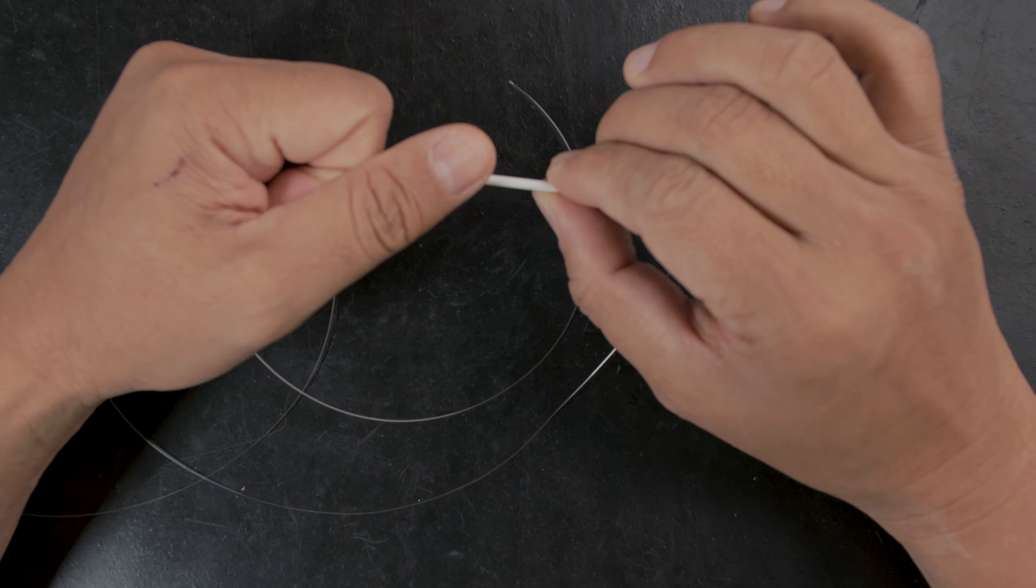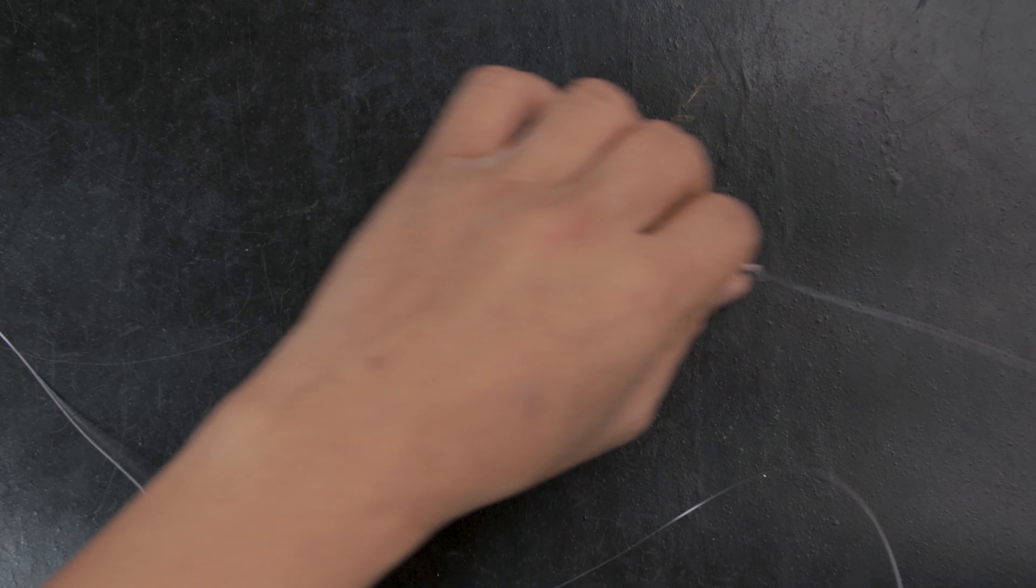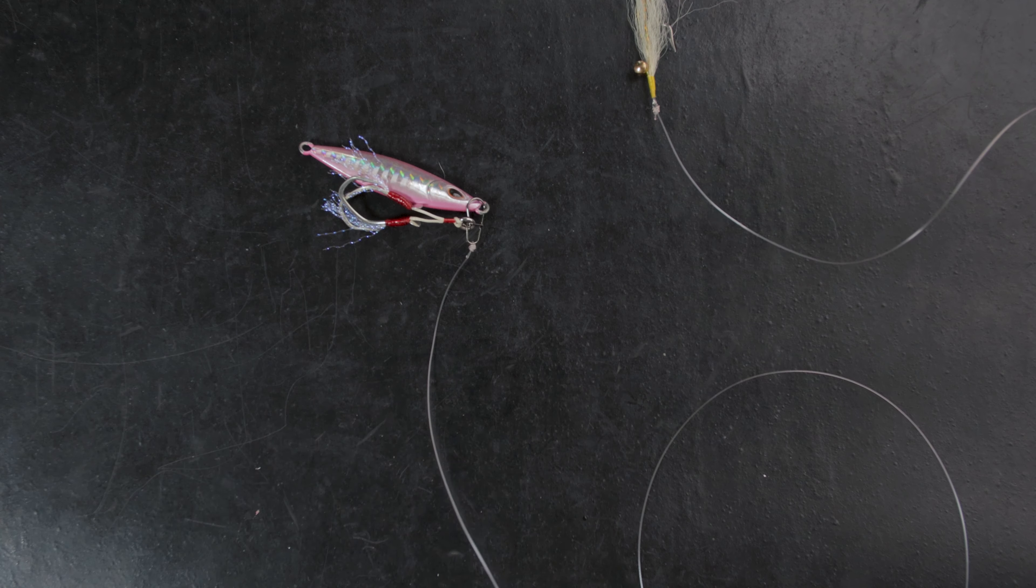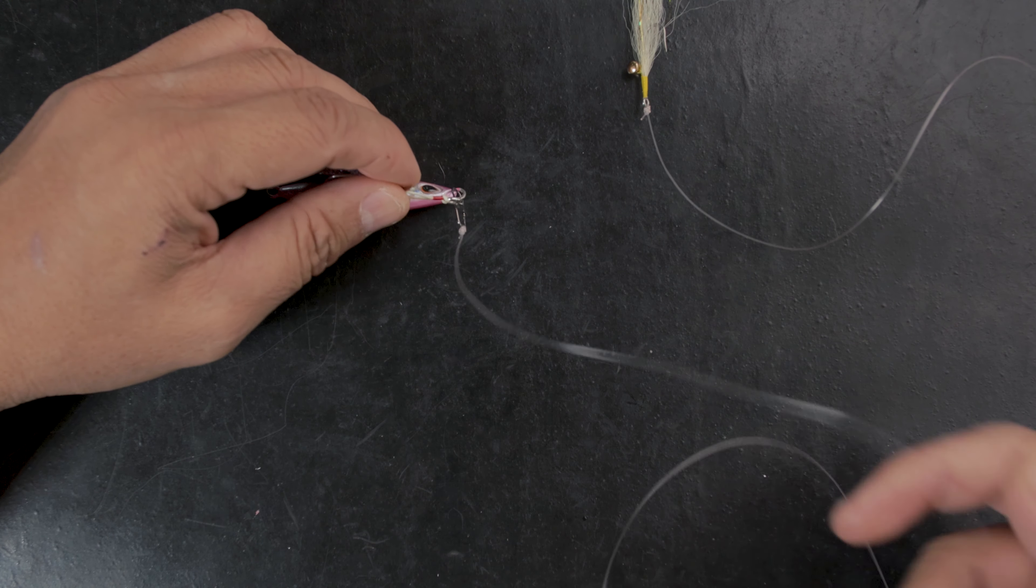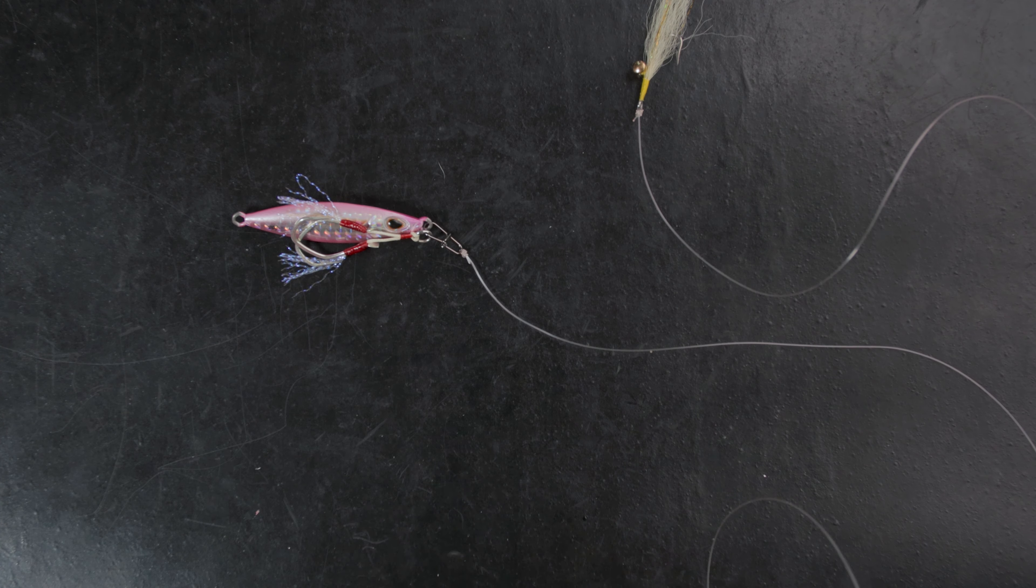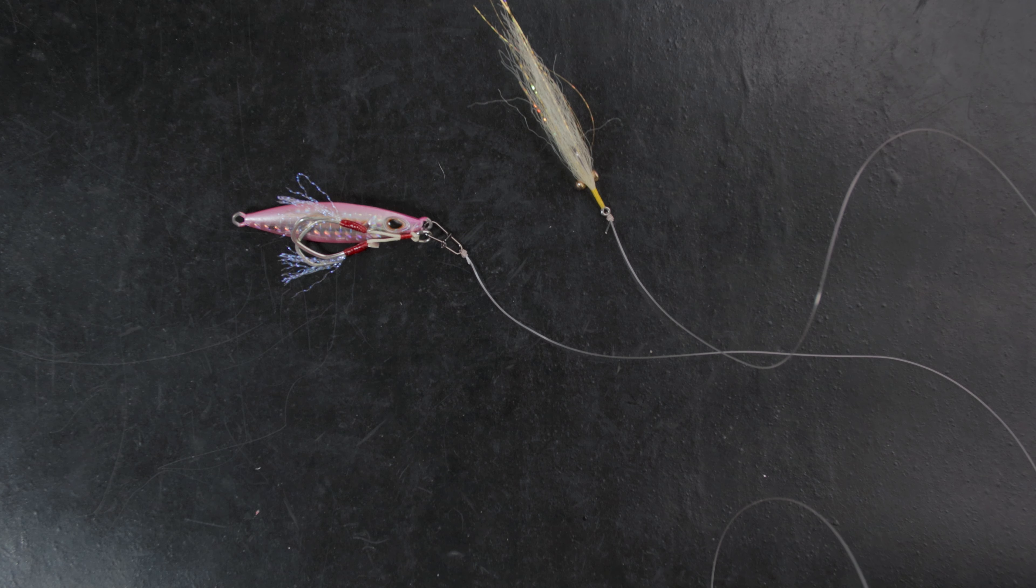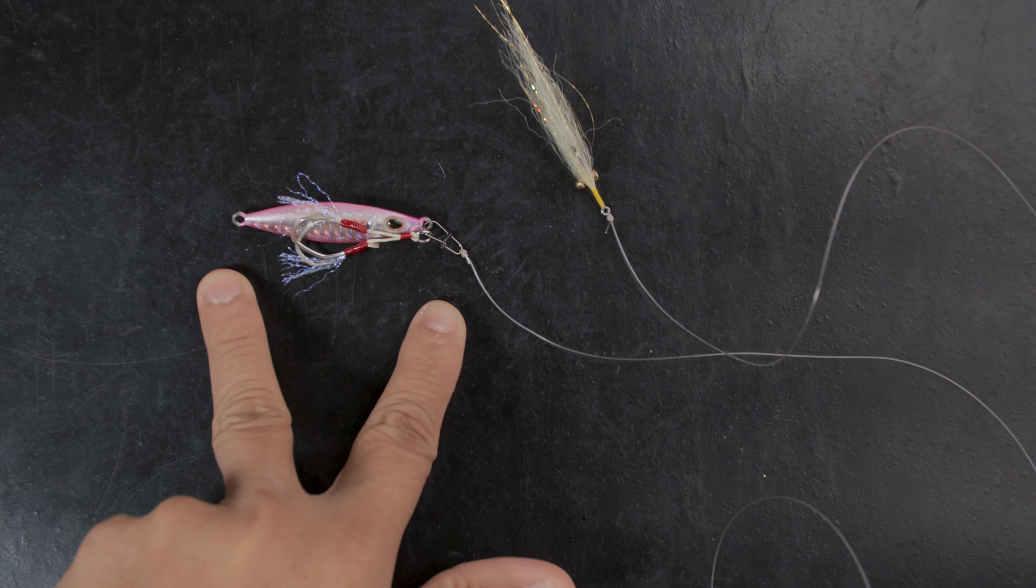If you want you could put a long leader here. Don't put a snap, you don't want a snap here. Long leader is good because when you're retrieving this, it looks like your jig is chasing after the fly. The plug, if you put this on, also looks like it's chasing after the fly. Best of both worlds is a spoon, something like a Kastmaster you could put on for this.